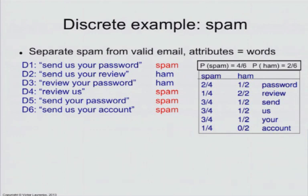That's the probability of seeing 'password' given that you're spam. All the denominators are four because we're conditioning on the spam class. And one out of two in the non-spam class, because that email D3 has the word 'password' in it and I only have two non-spam emails. So these are my class conditional probabilities: probability of seeing 'password' given spam, and one-half is the probability of seeing the word 'us' given non-spam.